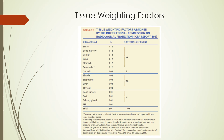This slide presents a table of tissue weighting factors. The highest tissue weighting factors of 0.12 are for various tissues listed here. The next highest tissue weighting factor is for the gonads at 0.08, and the lowest tissue weighting factor is for bone, brain, salivary gland, and skin. Note that the sum of all tissue weighting factors should add up to equal 1, and you can think of it as a percentage, so the sum of all tissue weighting factors should be 100%.